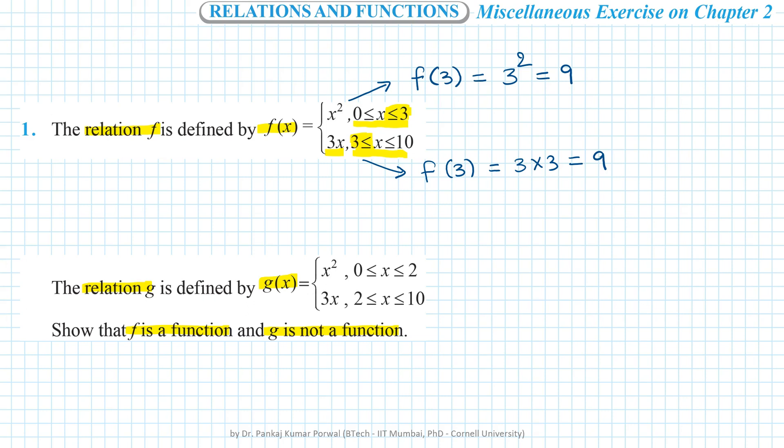Here we see that both the definitions of f at 3 give us same image 9. So we have one and only one image for all elements in domain of relation f. So the relation is a function.